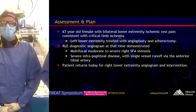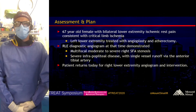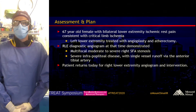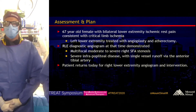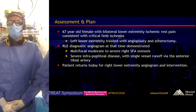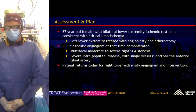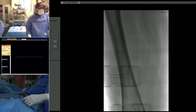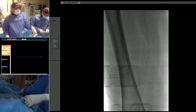In summary: 67-year-old female with bilateral lower extremity ischemic rest pain consistent with critical limb ischemia. The left lower extremity has been treated with angioplasty and atherectomy, and a right lower extremity diagnostic angiogram showed multifocal moderate-to-severe right SFA stenosis and severe infrapopliteal disease with single-vessel runoff via the anterior tibial. She returns today for right lower extremity angiogram and intervention. Right now we're getting our extra-long exchange-length glide wire down into the popliteal artery, and then we're going to trade out for the R2P sheath.